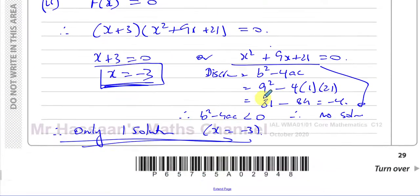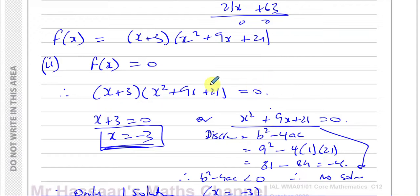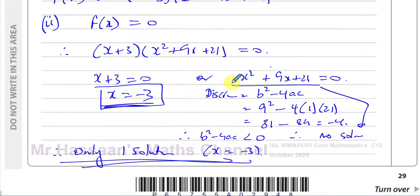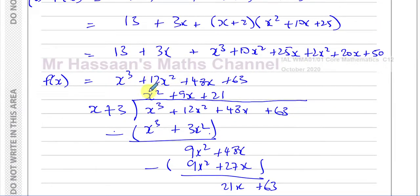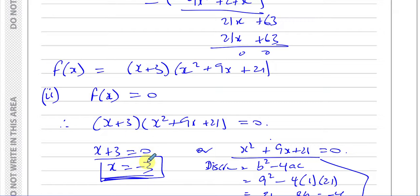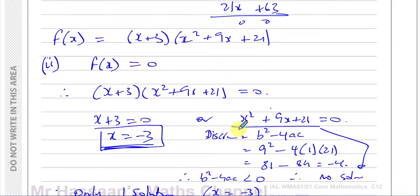A student was asking about the P1 exam — how to find the number of roots in a cubic. Something similar to this must have been their question. In a cubic function, once you've factorized it into a linear factor and a quadratic factor, you can use the discriminant on the quadratic part to show it has no solutions. You can't use the discriminant directly on a cubic — you have to factorize it first, then apply the discriminant to the resulting quadratic.